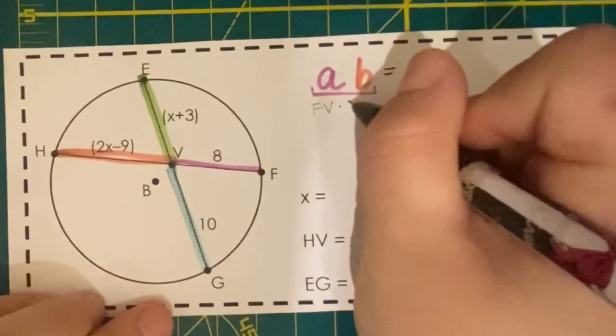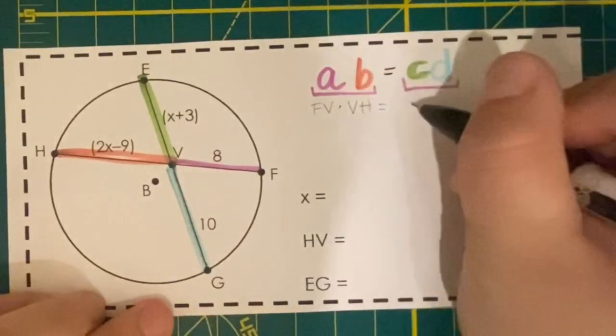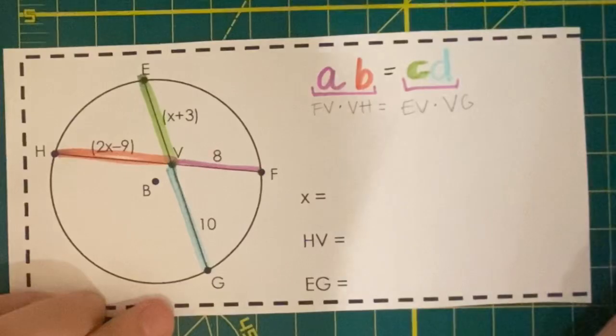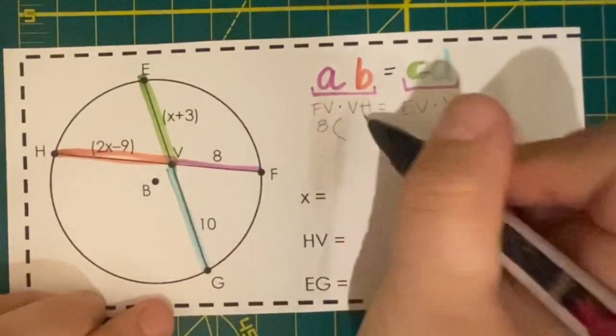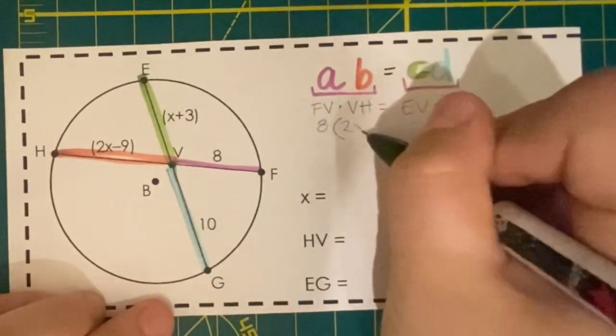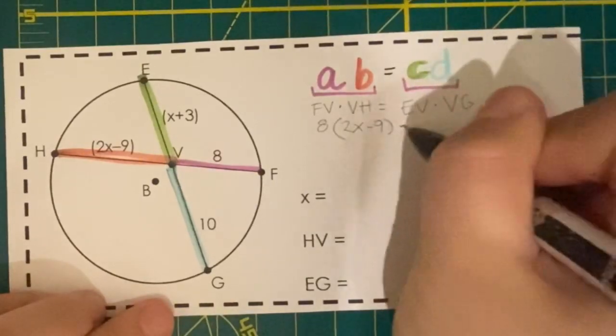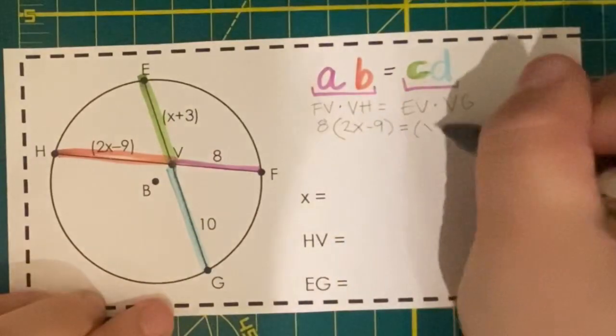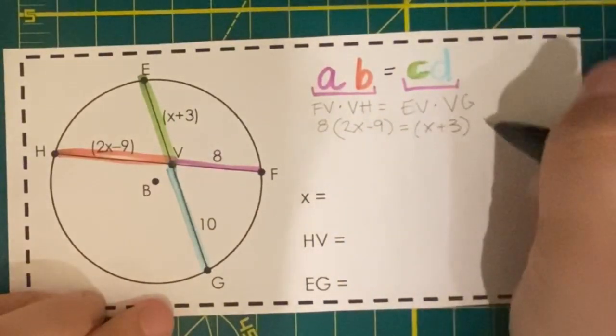So FV times VH is going to equal EV times VG. FV is 8, this time VH is more than just one term. EV is x plus 3, and VG is 10.